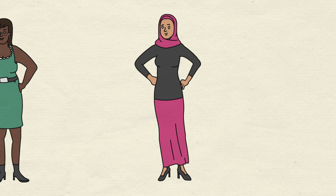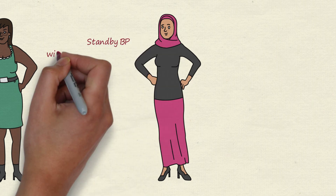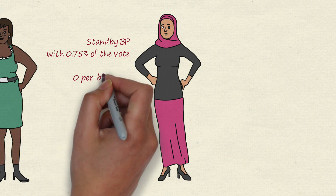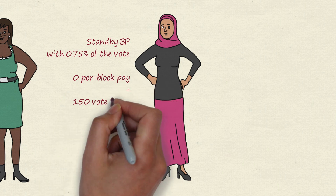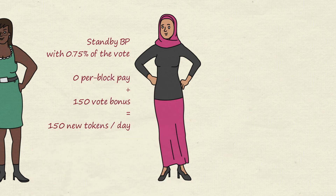By contrast, a standby block producer with 0.75% of the vote has no per block pay, but they are getting 150 in vote bonus. So they're taking home 150 new tokens per day.